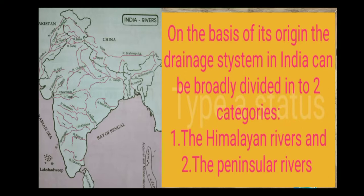The Himalayan Rivers include, for example, the Indus, Ganga, and Brahmaputra. The Peninsular Plateau rivers include Krishna, Godavari, and Mahanadi. These are all Peninsular Plateau rivers. On the Indian map, we can observe both the Himalayan Rivers and the Peninsular Plateau rivers.